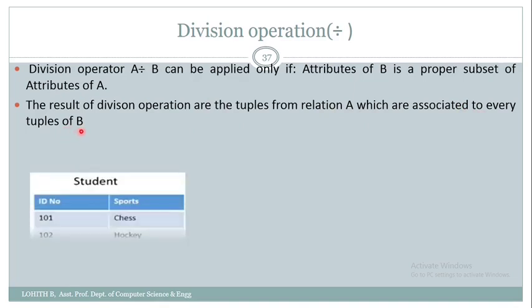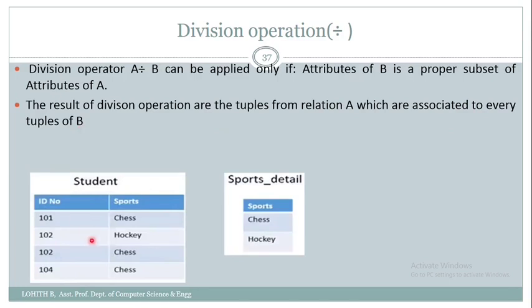Let me explain this with an example of a student and sports relation. In the student relation we have two attributes: ID number and sports. This represents student enrollment to various sports. Here I have a list of sports — chess and hockey. Now if I want to know the students who have enrolled for all the sports, I need to make use of a division operation.